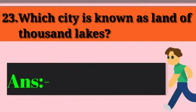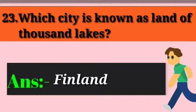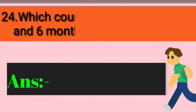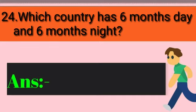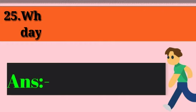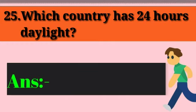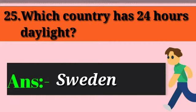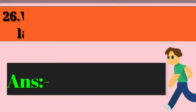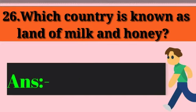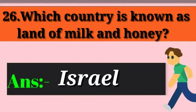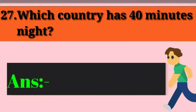Question 23: Which country is known as the land of a thousand lakes? Answer: Finland. Question 24: Which country has 6 months' day and 6 months' night? Answer: Antarctica. Question 25: Which country has 24 hours' daylight? Answer: Sweden. Question 26: Which country is known as the land of milk and honey? Answer: Israel. Question 27: Which country has only 40 minutes of night? Answer: Norway.